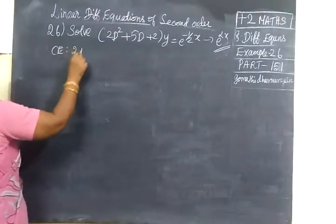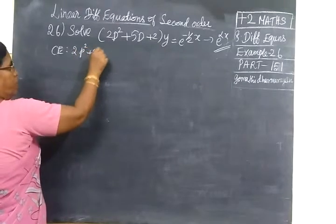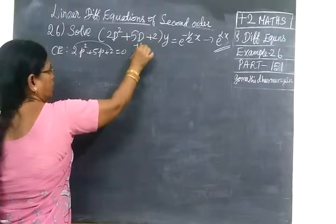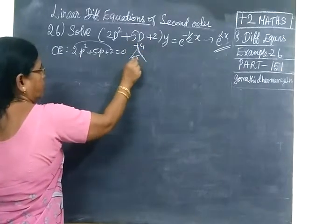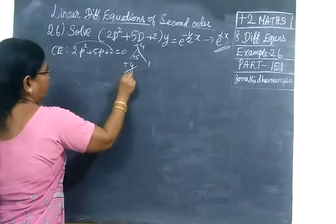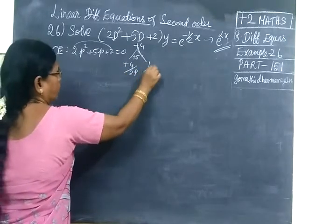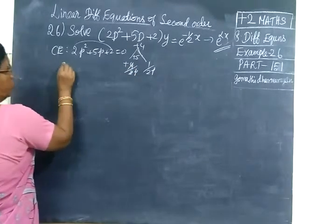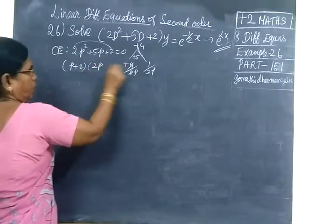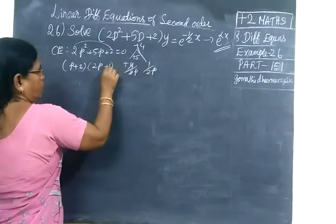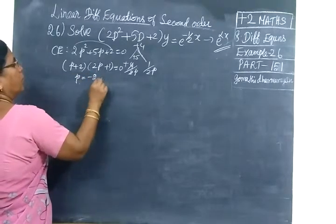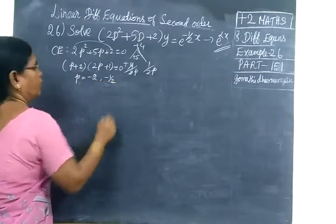The characteristic equation is 2p² + 5p + 2 = 0. Multiplying: 4 added gives 5. So the factors are (p + 2)(2p + 1) = 0, giving roots p = −2 and p = −1/2.